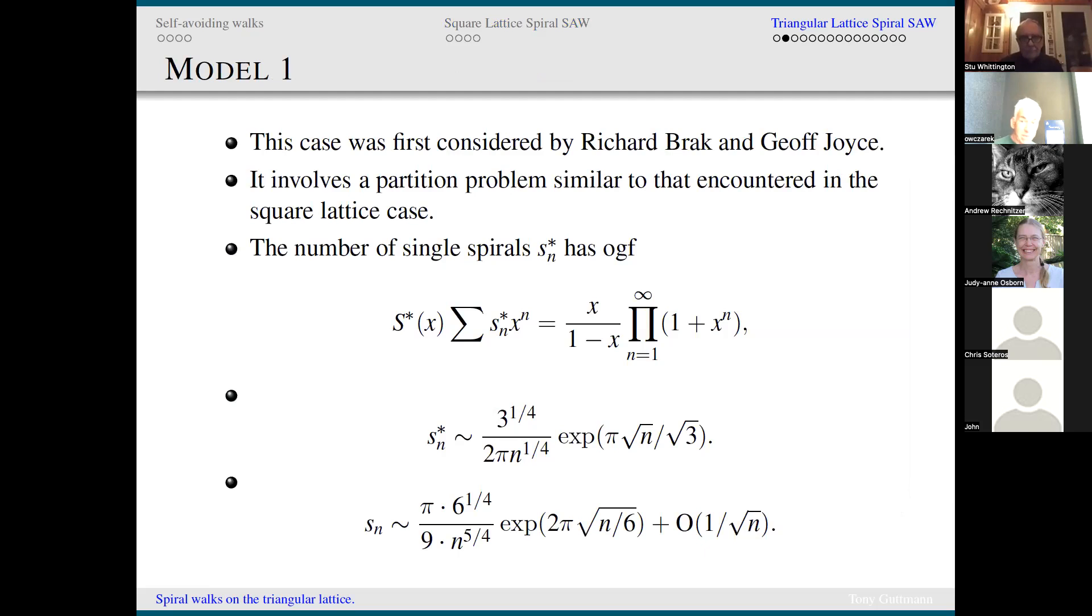It actually involves a partition problem very similar to that encountered in the square lattice case. The number of single spirals has a generating function where the infinite product instead of being one over one minus x to the n is a product of one plus x to the n, from which the asymptotics can be derived. You've got the same e to the pi root n behavior, different constant, and the exponent is slightly different. That's what Richard and Jeff did, and indeed they found the full asymptotic expansion.